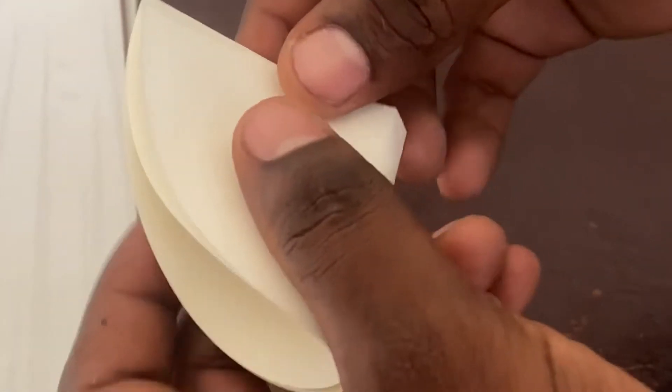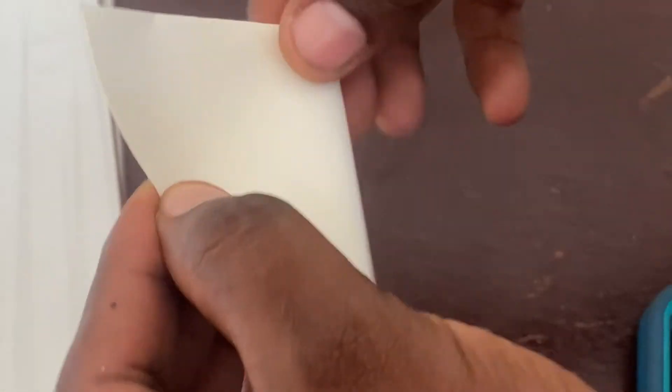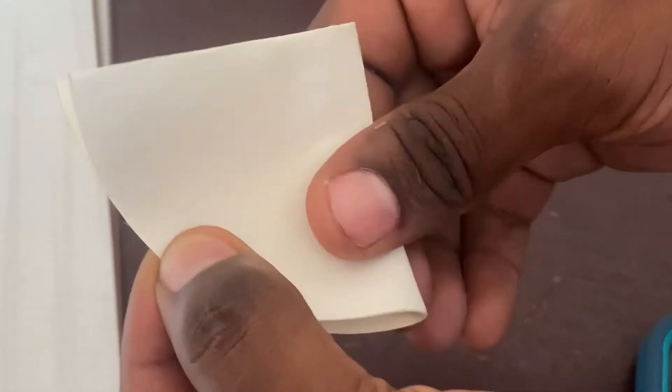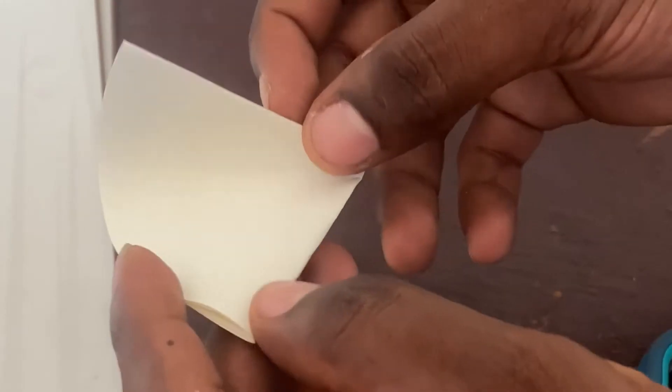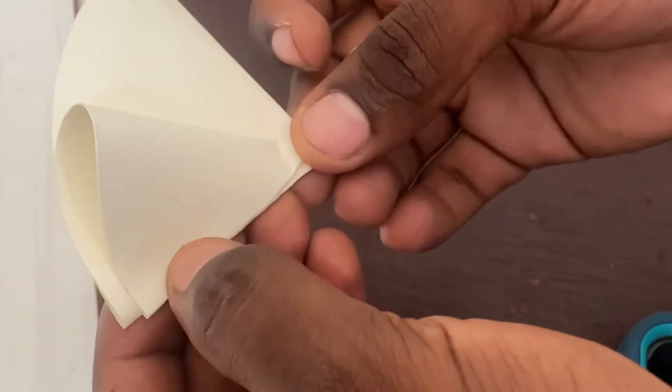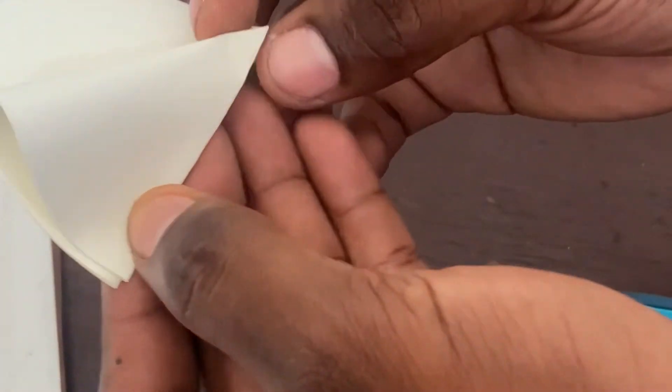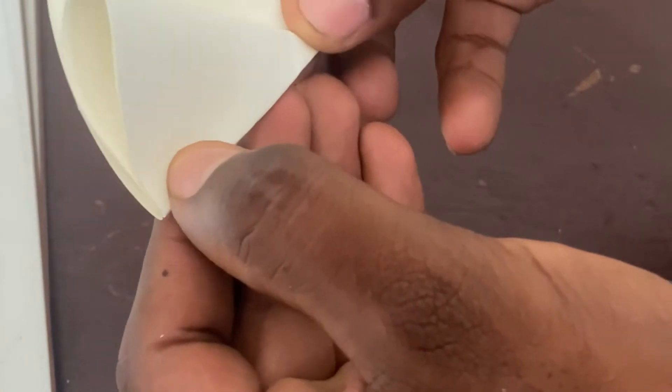We flute the filter paper by folding it into halves and creasing the sides, ensuring that the creases all lead to the middle point of the filter paper. This ensures that the separation takes place.